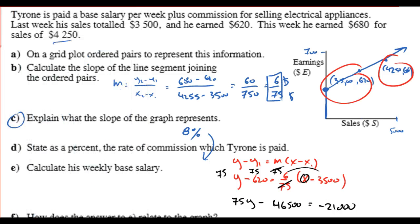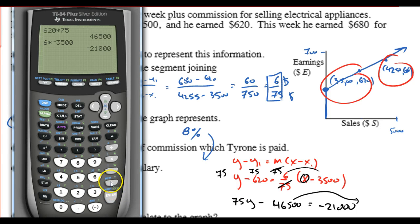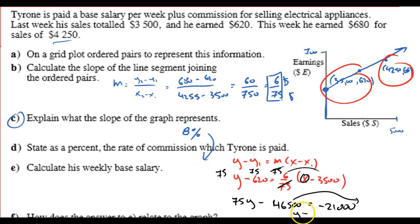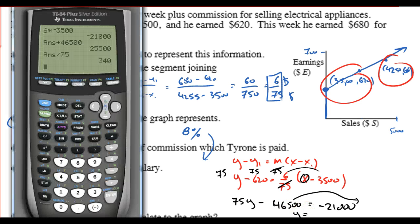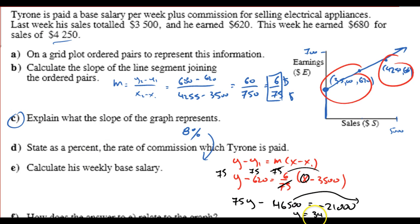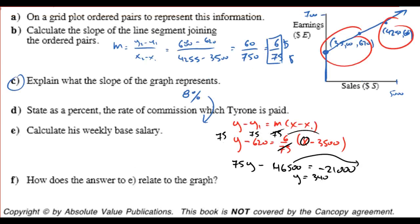And now I'm going to add this to both sides. Add 46,500 to both sides. And finally, divide that number by 75 to get Y equals 340. So, what did I just do there? I calculated the Y-intercept. The Y-intercept, and this should probably just be his earnings. So, his earnings are $340.